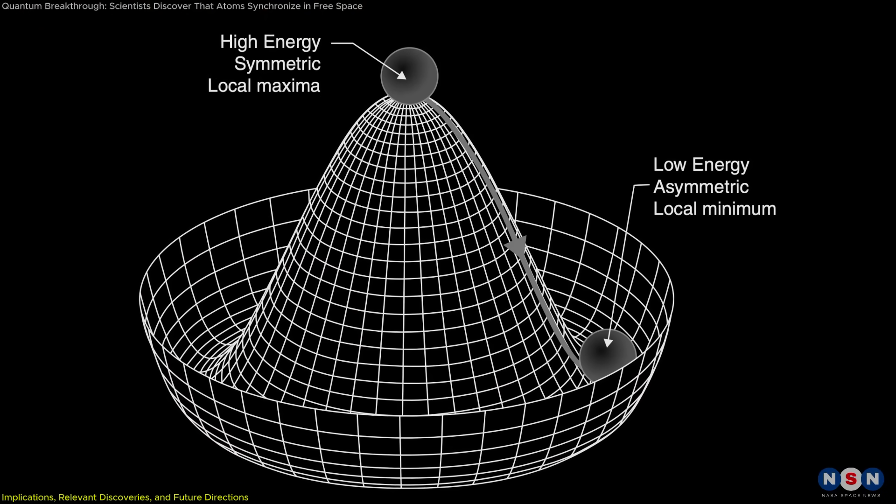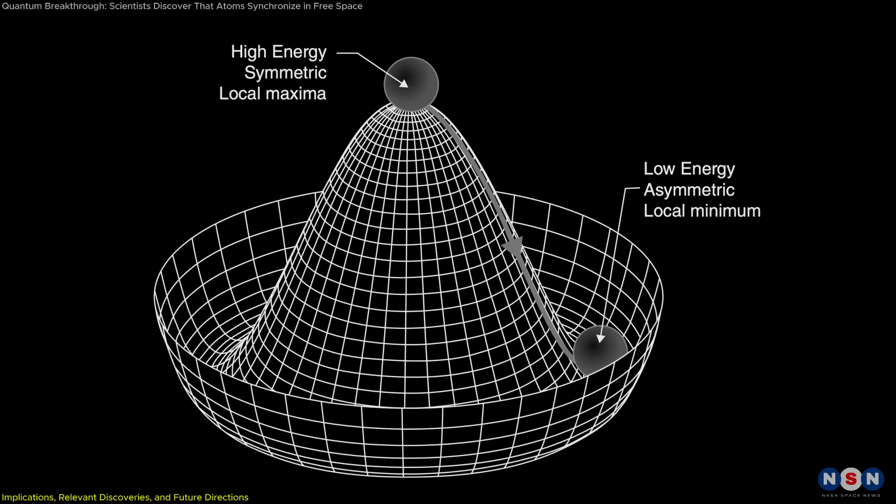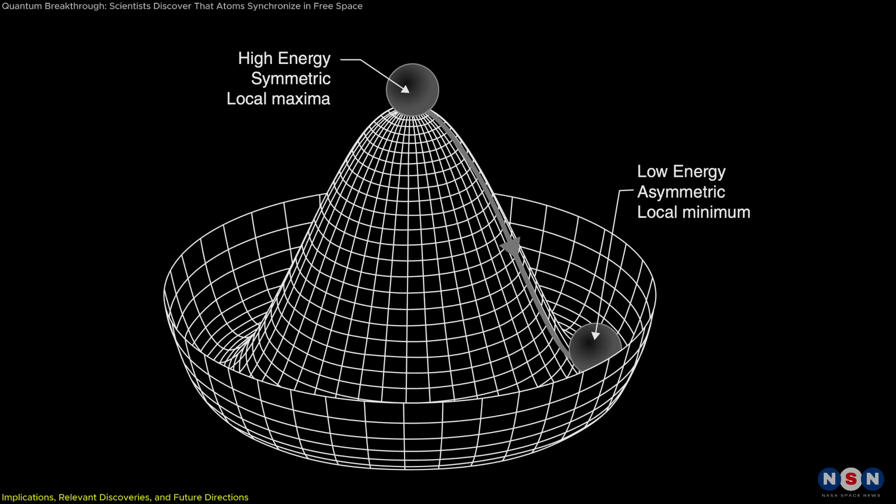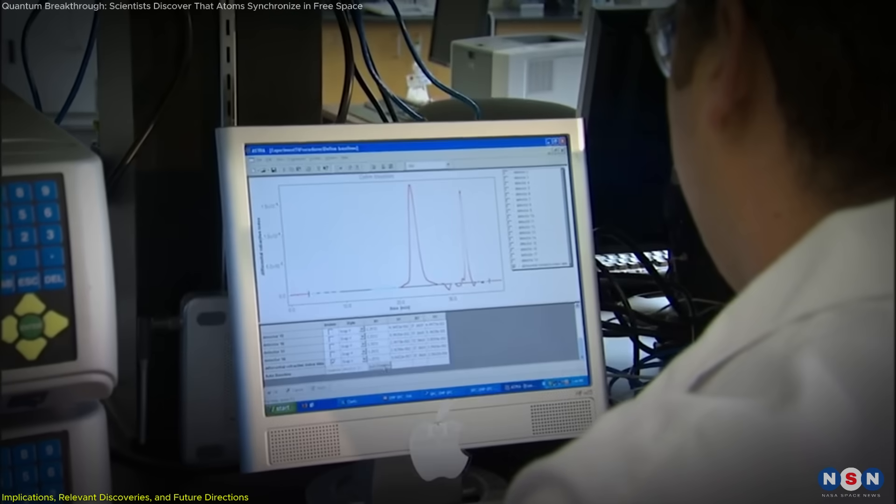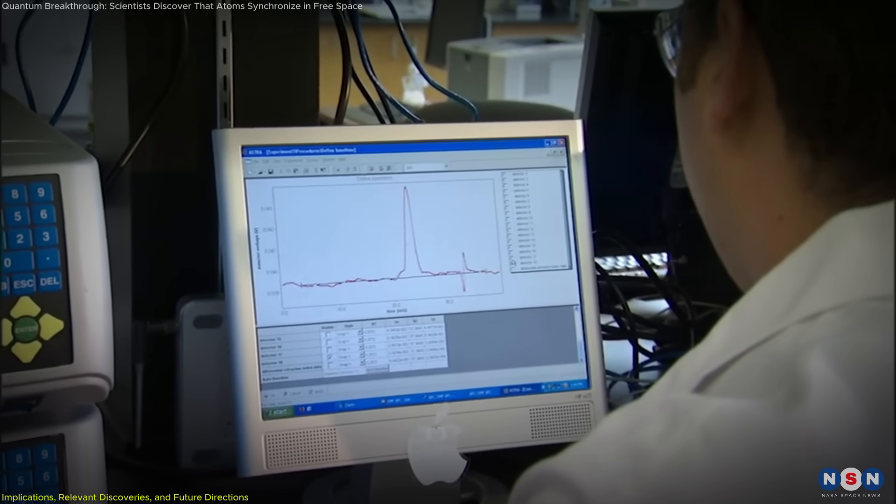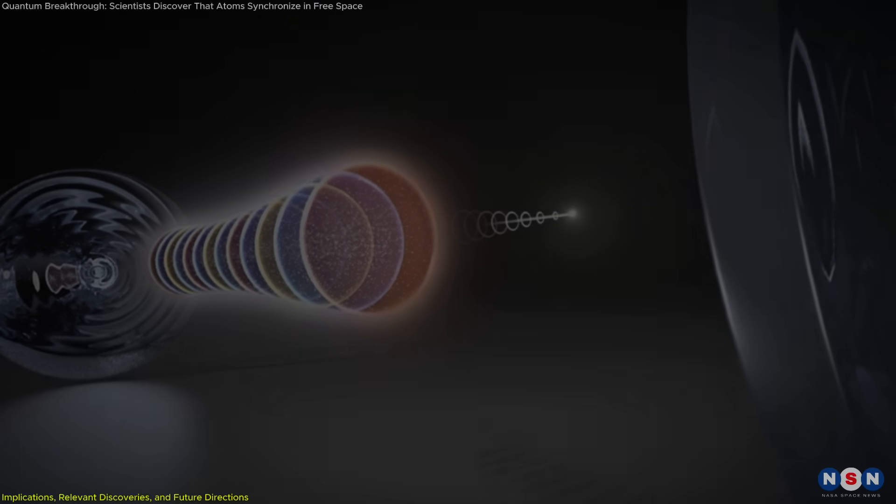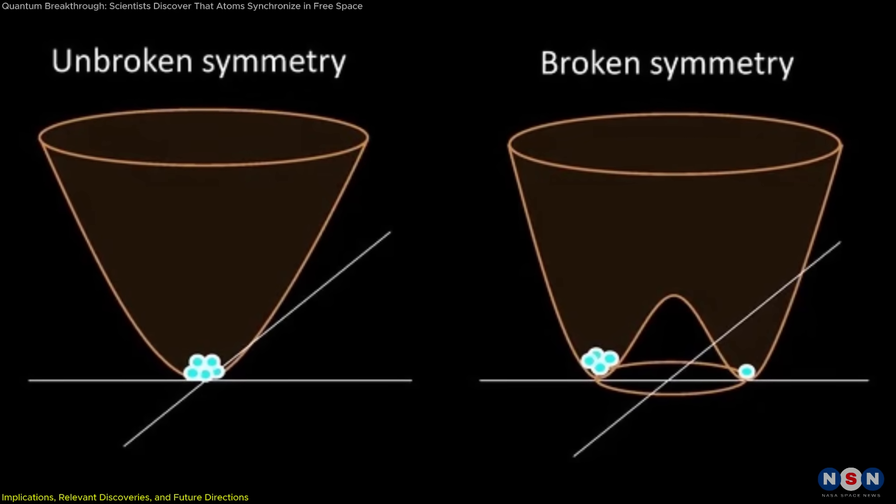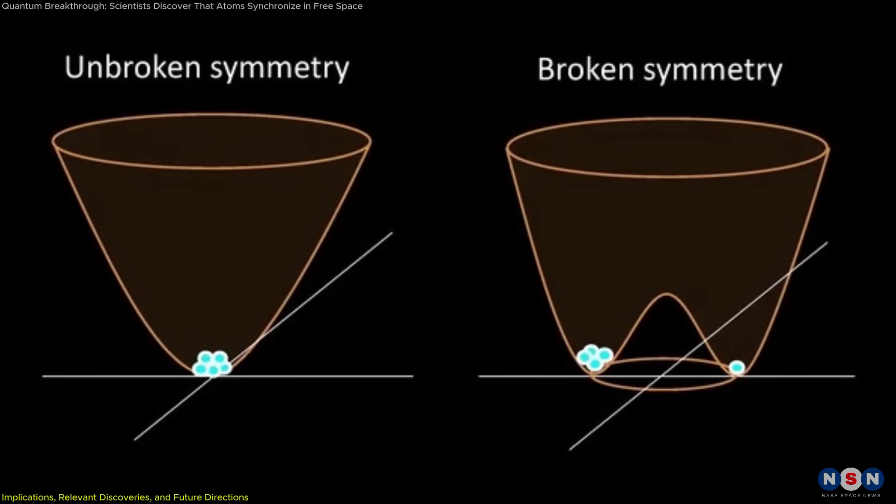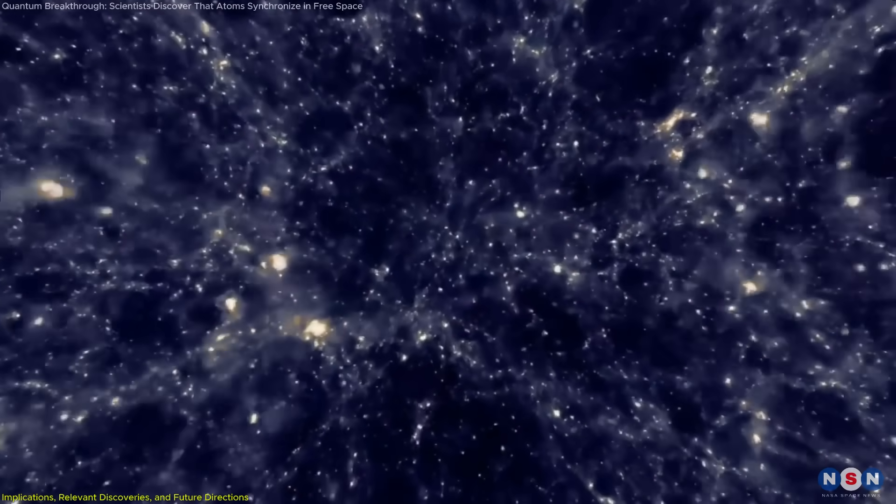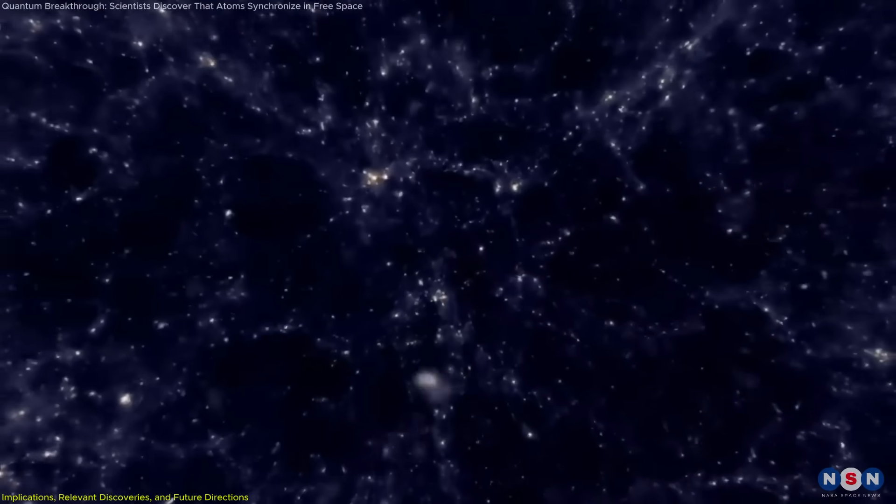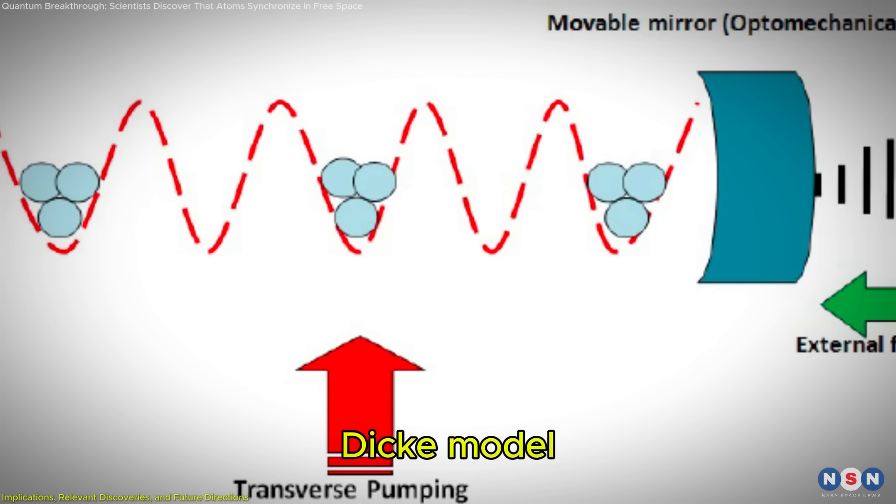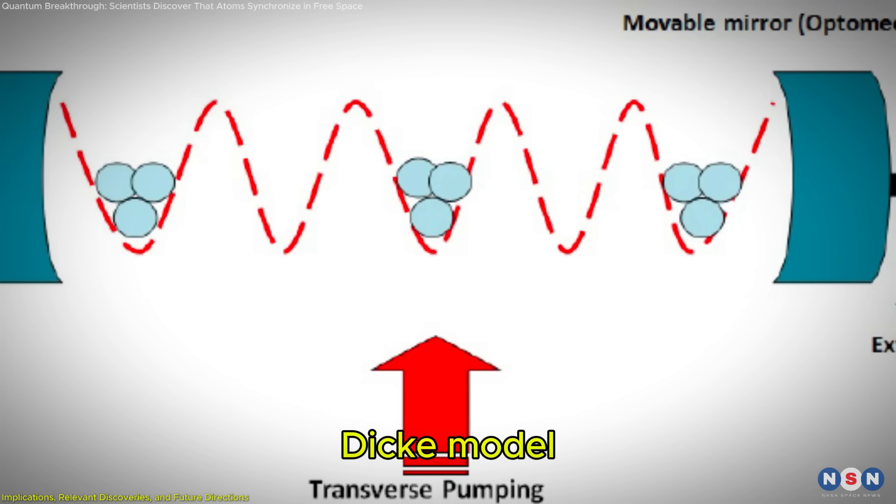Another relevant theory is the concept of spontaneous symmetry breaking in quantum systems. This principle, often observed in condensed matter physics, explains how systems can transition into a more ordered state from a disordered one. In the context of superradiance, spontaneous symmetry breaking could provide a framework to understand how partial synchronization emerges and what conditions might allow a transition to full superradiance in free space. This idea complements the Dickey model by adding another layer of explanation for the observed phenomena.